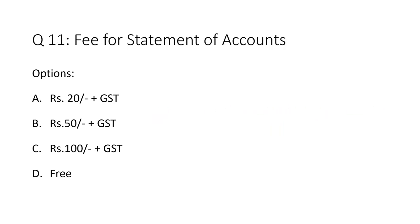Question 11: Fee for statement of accounts. Option A: rupees 20 plus GST. Option B: rupees 50 plus GST. Option C: rupees 100 plus GST. The correct answer is Option A — rupees 20 plus GST. It may be requested any number of times; each time the fee is rupees 20 plus GST.